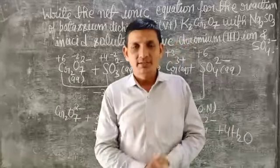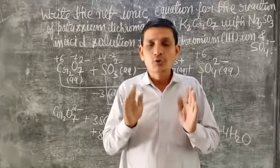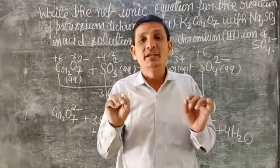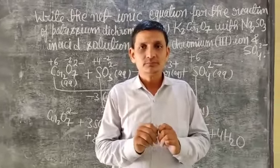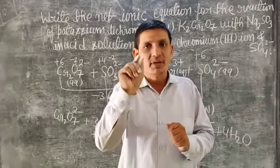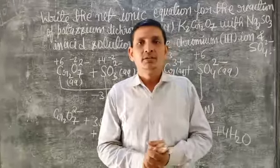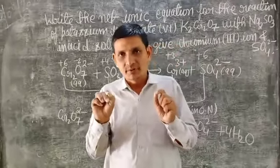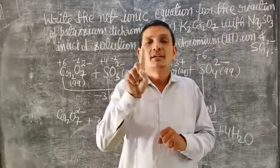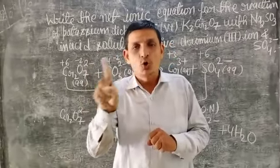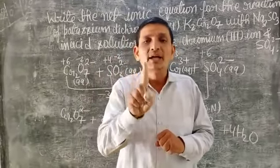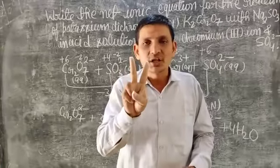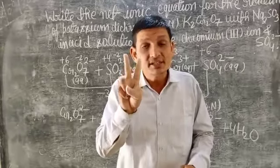In this lecture I am telling you how you can balance a given reaction with the help of the oxidation number method. The steps involved in the oxidation number method are: Step 1 — write the skeletal equation or unbalanced equation. Step 2 — write the oxidation number of each element.